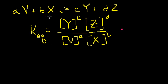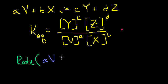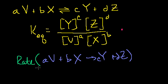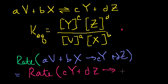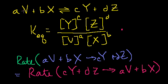So what makes a reaction happen? What does equilibrium mean? It means that the rate at which the forward reaction is happening — V plus X turning into Y plus Z — is equal to the rate of the reverse reaction: C moles of Y plus D moles of Z turning back into V and X. It doesn't necessarily mean the concentrations are the same; equilibrium means the concentrations have reached a stability point where the forward and reverse rates are equal.